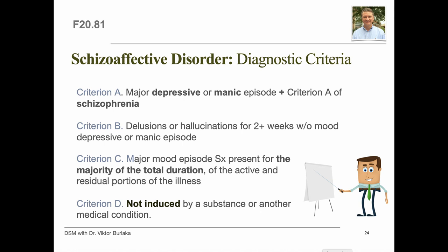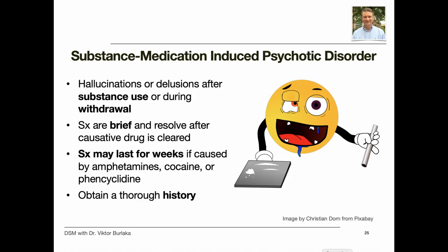Criterion D states the disturbance is not attributable to the effects of a substance — for example, a drug of abuse, a medication, or another medical condition. Substance or medication-induced psychotic disorder is characterized by hallucinations or delusions due to the direct effects of a substance or withdrawal from a substance, in the absence of delirium.